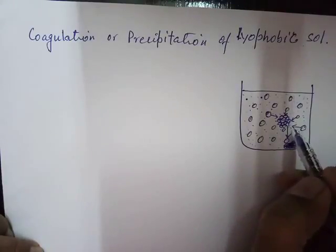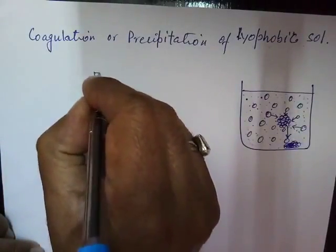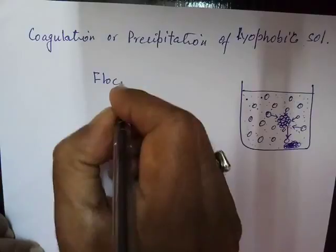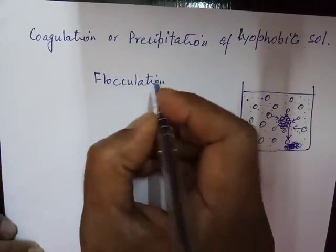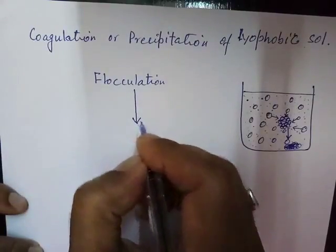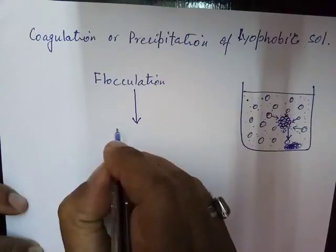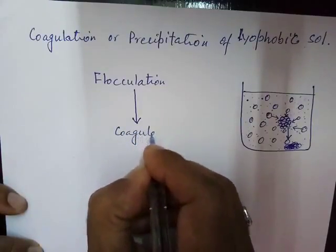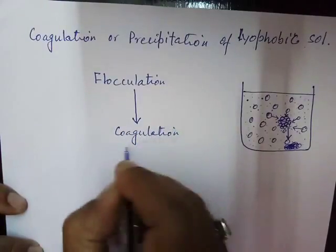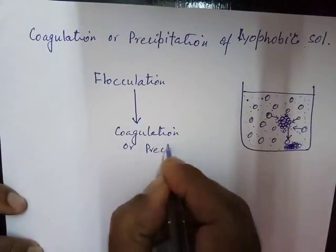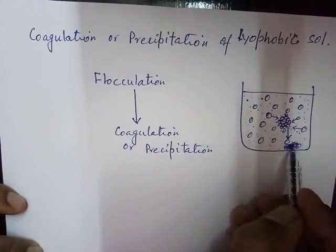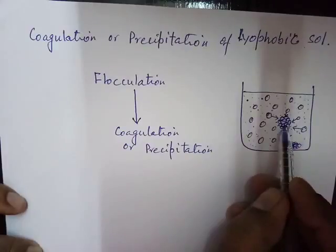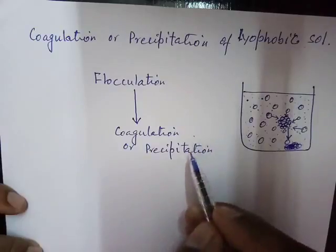So we have studied two terms: first, the colloidal particles lose their charge by some means, then flocculation takes place, and flocculation is followed by coagulation or precipitation. This settling down of colloidal particles by losing their charge is known as coagulation or precipitation.